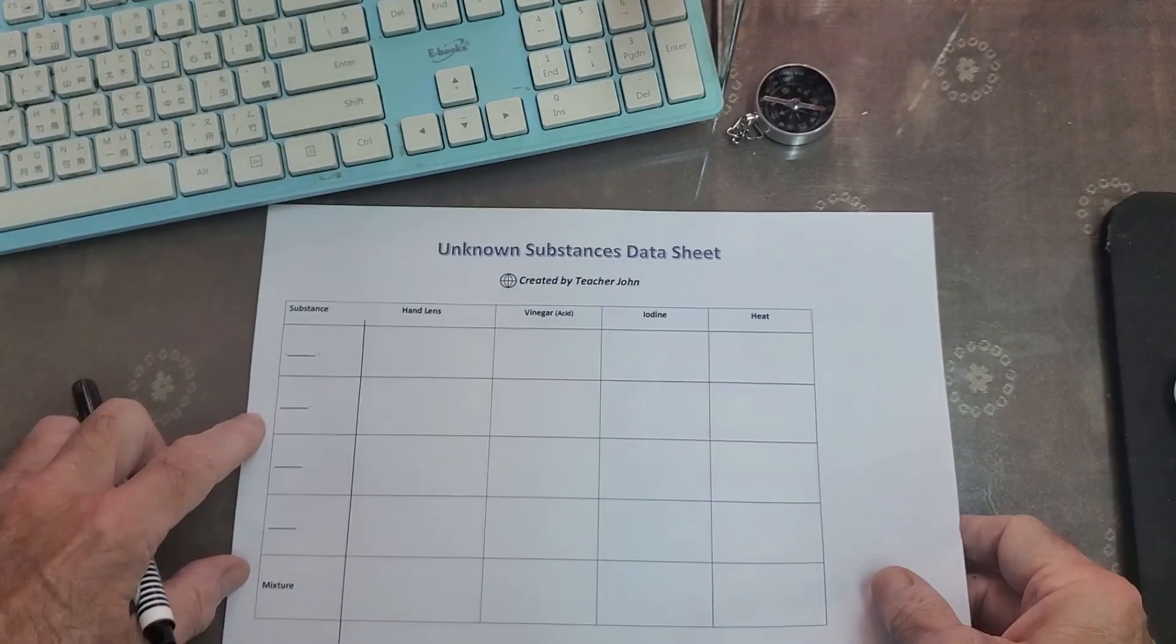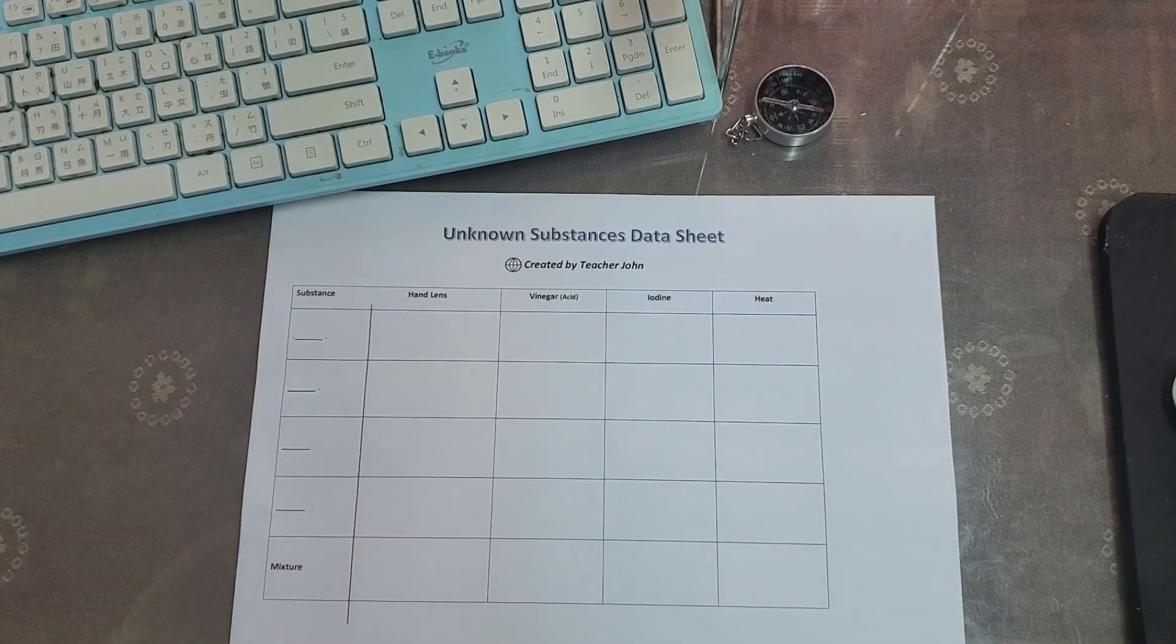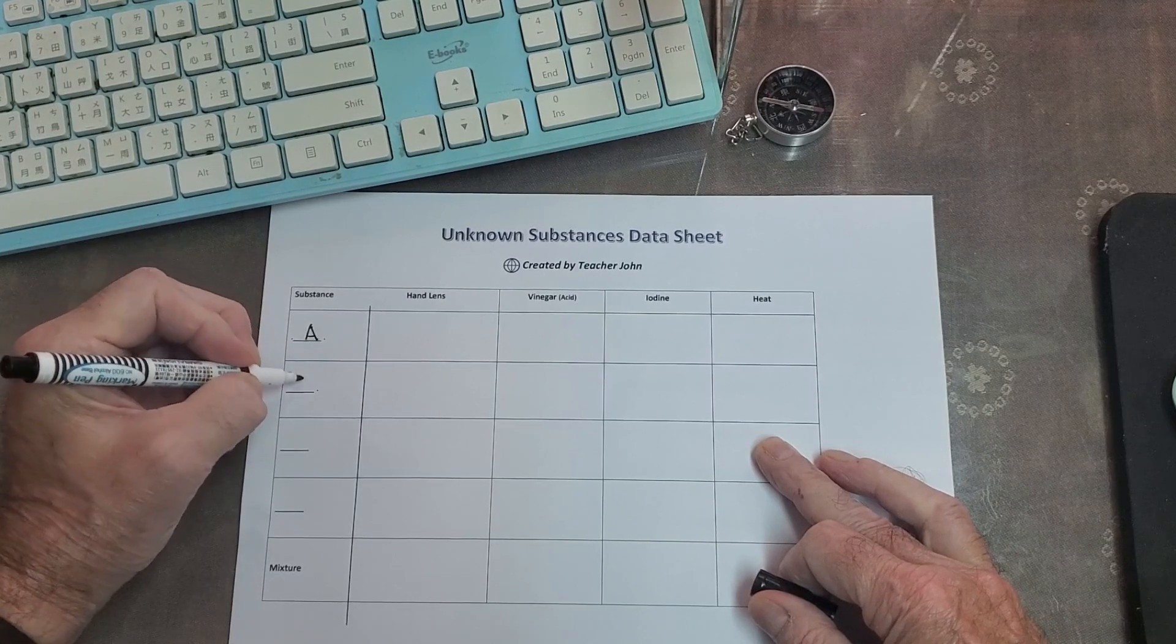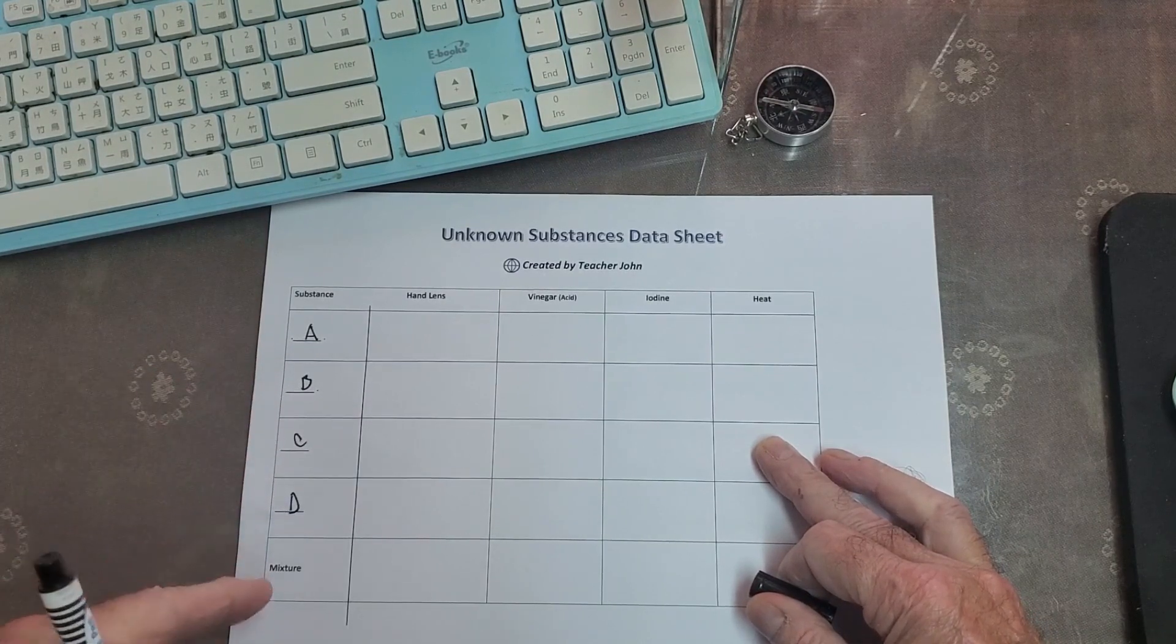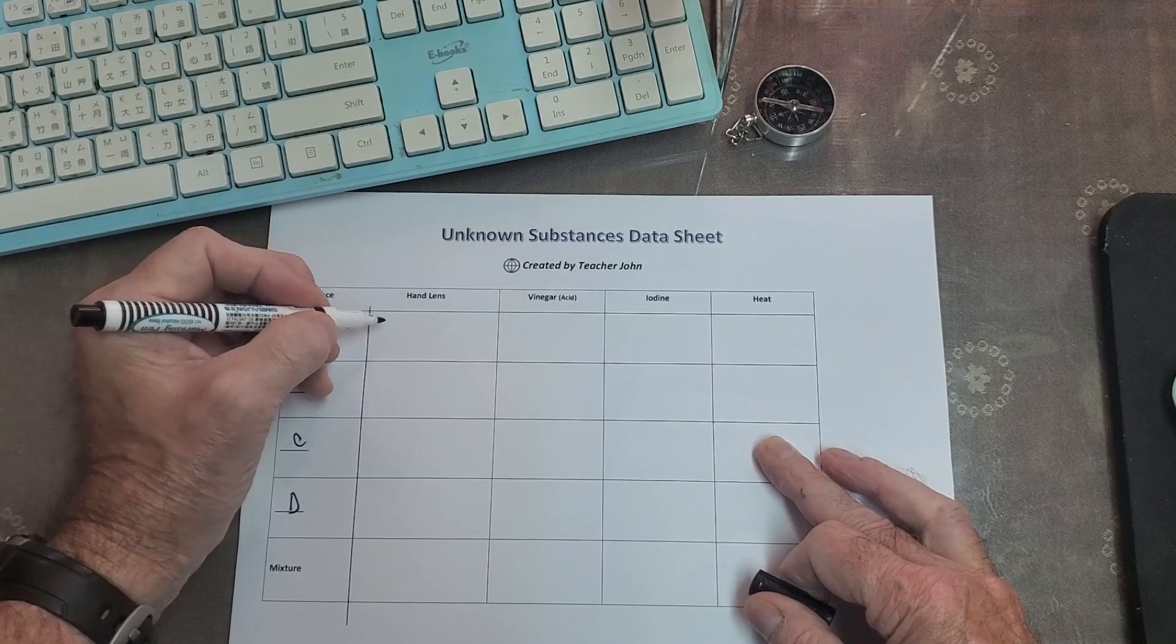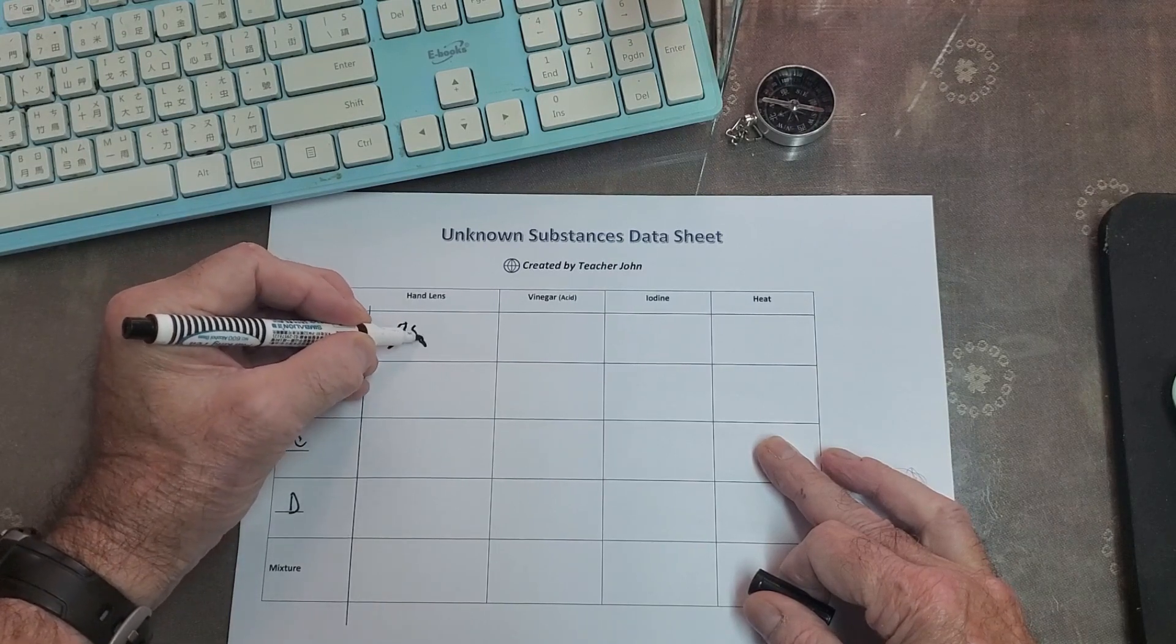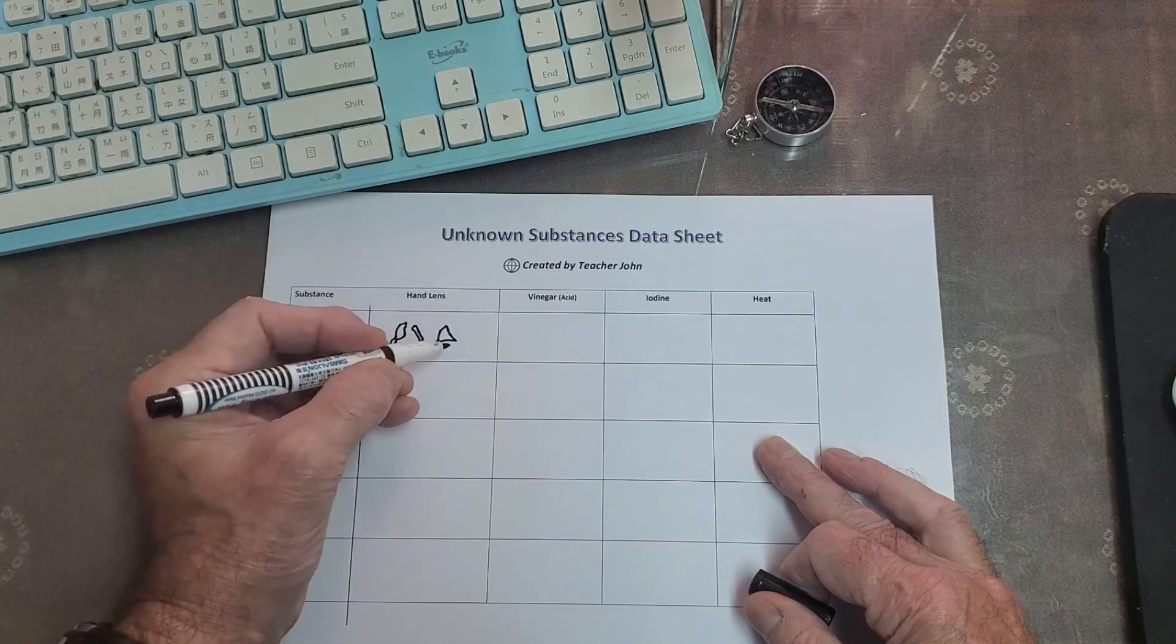Here's the unknown substances data sheet. And we would fill it out like this. Substance A, B, C, and D. And the mixture later. Hand lens. What did we see under the hand lens? Students can draw shapes on the board and they might be different shapes.